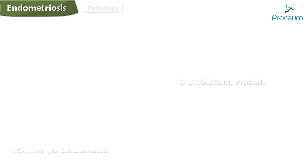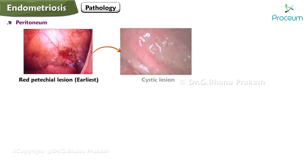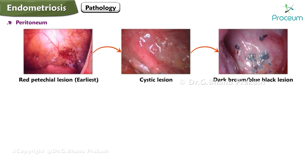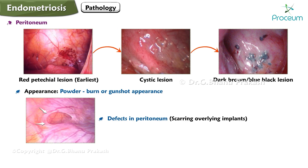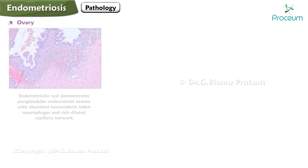Endometriosis of the ovary is called an endometrioma or chocolate cyst. Regarding pathology of the peritoneum, the earliest lesion is a red petechial lesion, later becoming a cystic dark brown or blue-black lesion called a powder burn or gunshot appearance. Defects in the peritoneum with scarring overlying implants is called Allen-Masters syndrome.